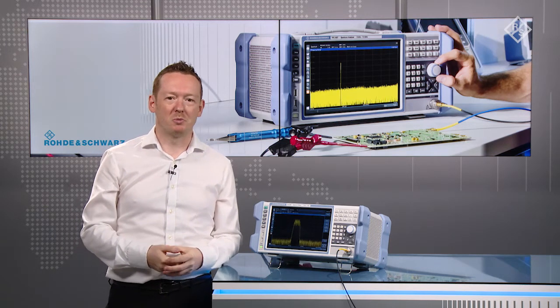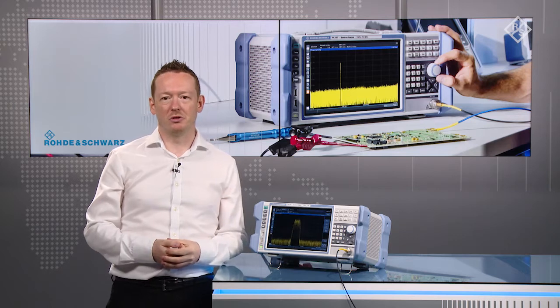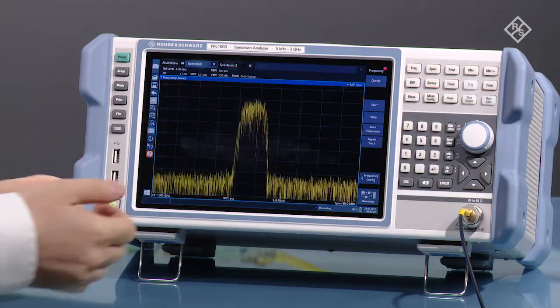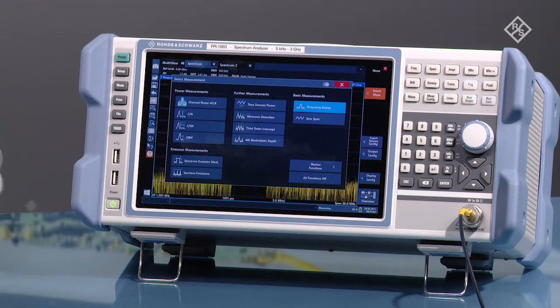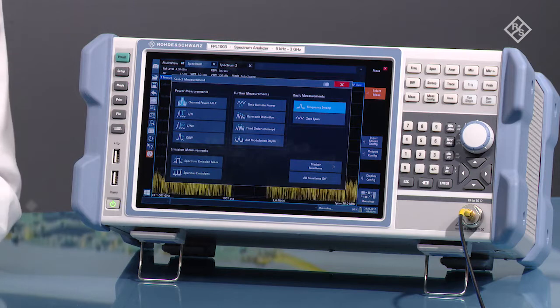The FPL-1000 also supports many advanced spectrum measurement functions. For example measurement of in-band power, signal-to-noise ratio, spurious emissions or adjacent channel power performance. And these can be selected easily on the user interface.